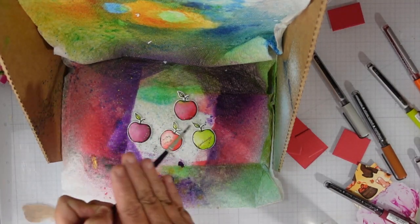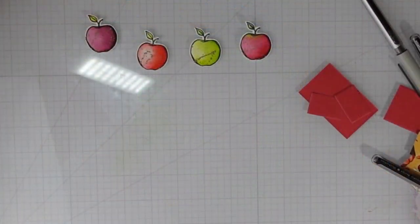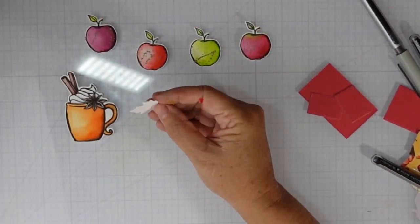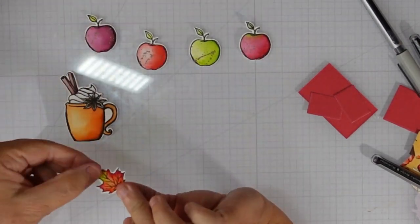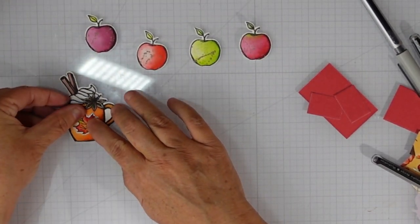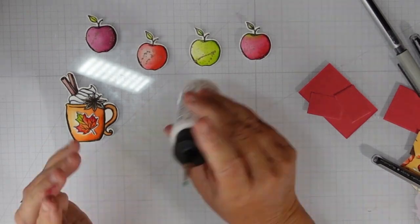I have some toffee gouache and you can see that I got a little bit of a streak on that green apple. I'm not worried about that because I am going to place it behind two of the other apples. I colored one of the leaves and added it to my coffee mug.